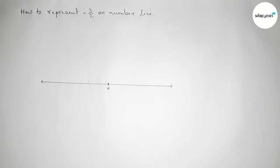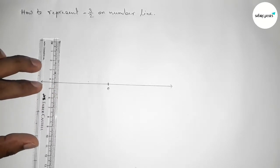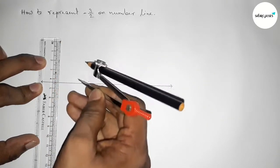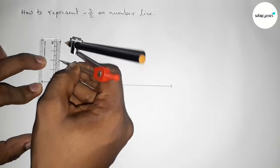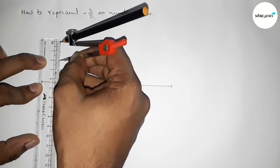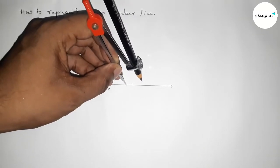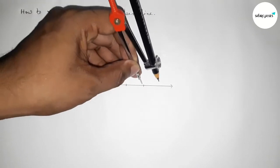We have to take a length by using scale. So here I am taking two centimeter length by using compass, by this way. And now putting the compass on the point zero and cut here and cut here.